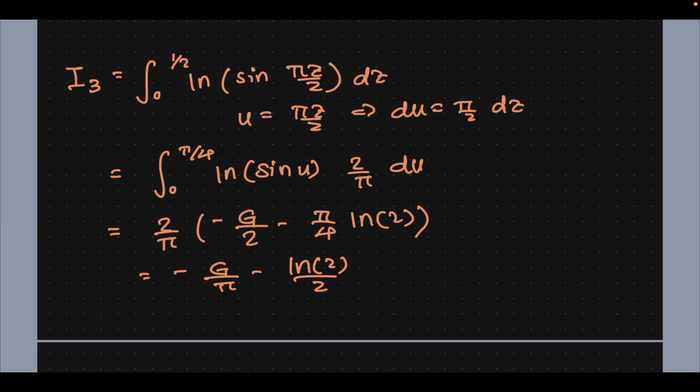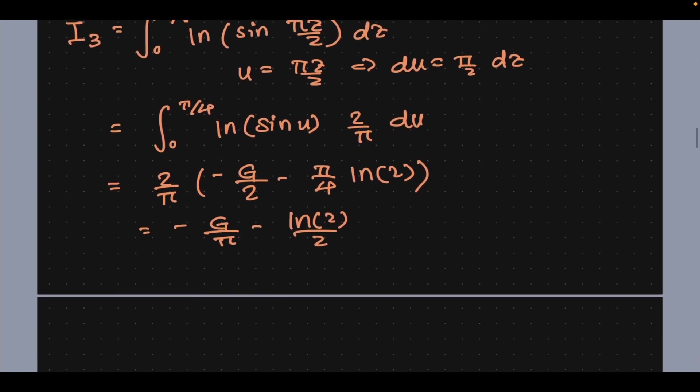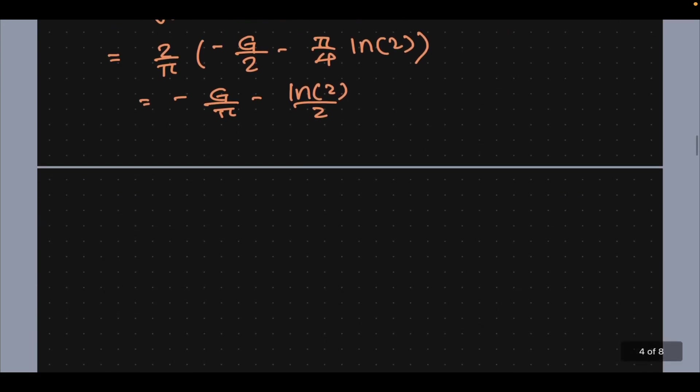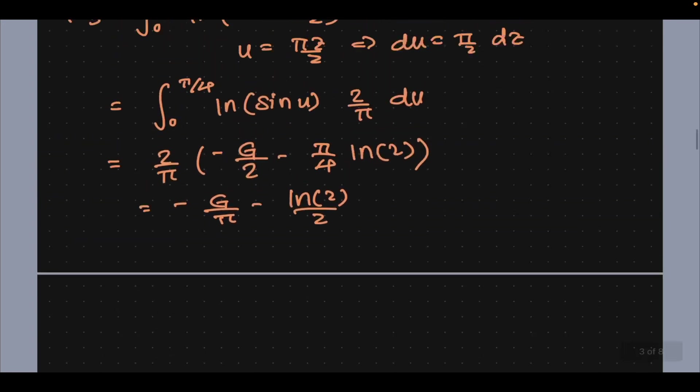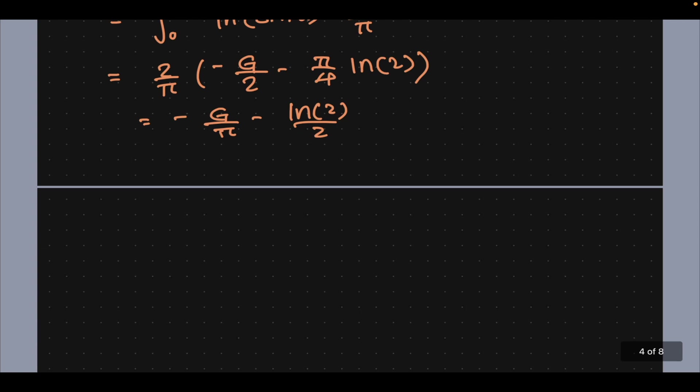So the integral that we were solving didn't seem that ugly, but what we got is a little horrid. We have Catalan's constant which is an indeterminate transcendental slash irrational number.